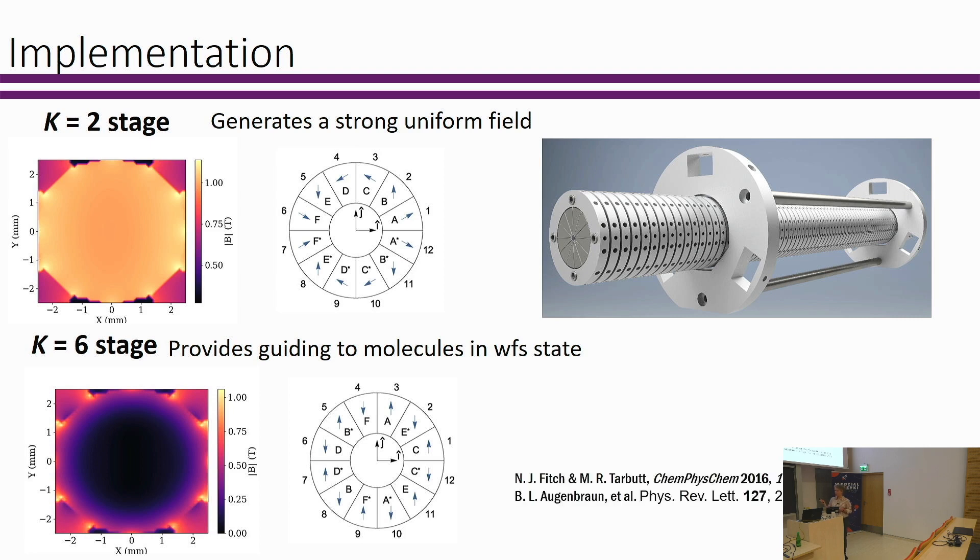This design was first proposed by Nora Fitch and Mike Tarbutt. The concept has been demonstrated in the Doyle group, where they used very large superconducting magnetic coils in order to decelerate molecules with only two stages.